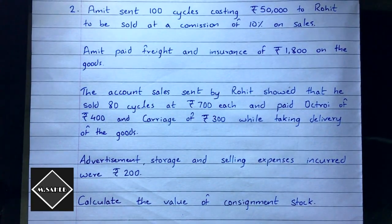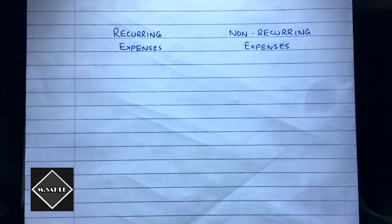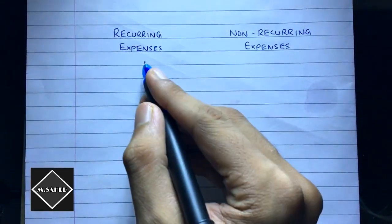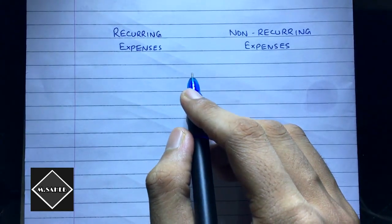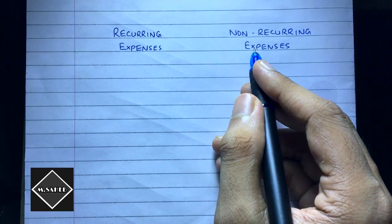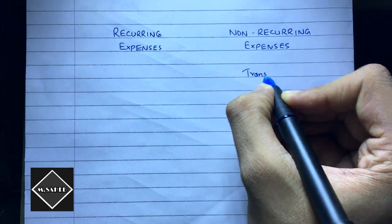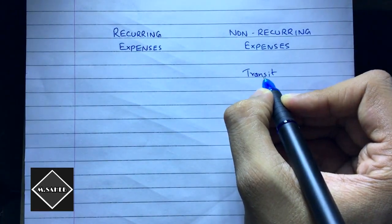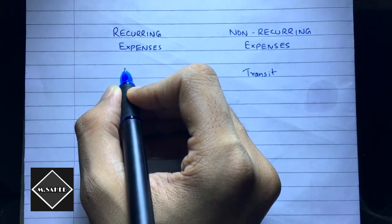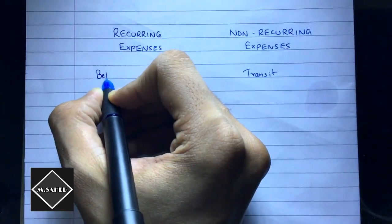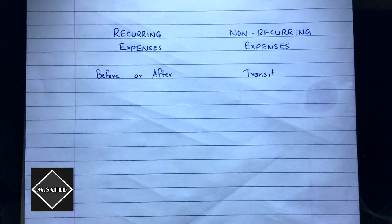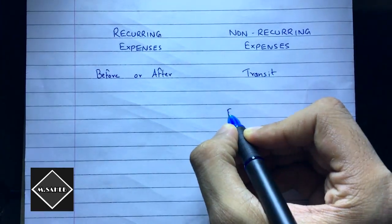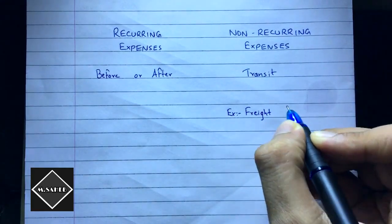An important concept to understand is the difference between recurring expenses and non-recurring expenses. Non-recurring expenses are those incurred in transit, while recurring expenses are those incurred before or after transit.